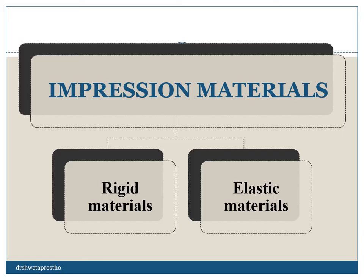Impression materials. For fabrication of a removable partial denture, the patient is partially edentulous, meaning teeth are present and mucosa is also present — we have to record both. So both types of materials will be required: rigid materials as well as elastic materials. We can use impression paste, zinc oxide eugenol impression paste, and mouth temperature waxes for recording the mucosa, and we can use alginate or silicones for recording the teeth area.